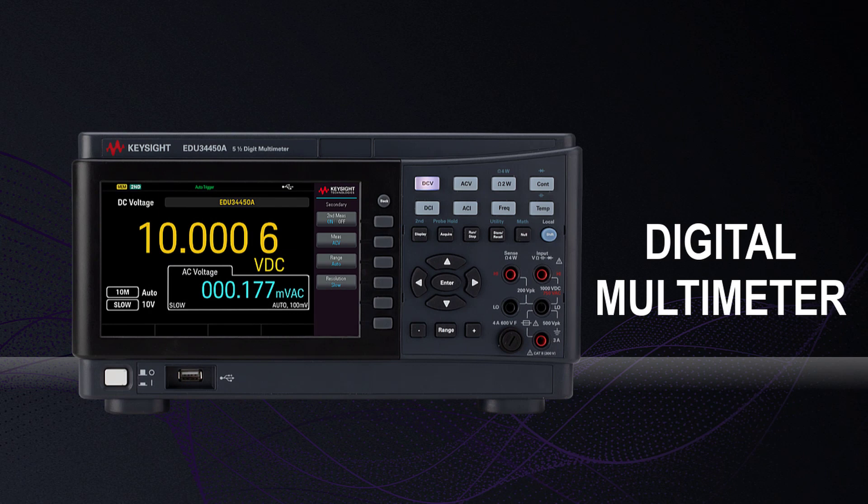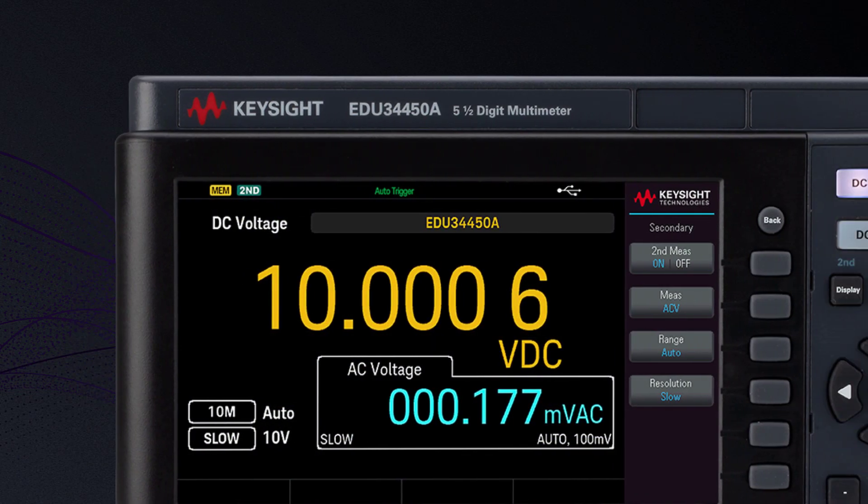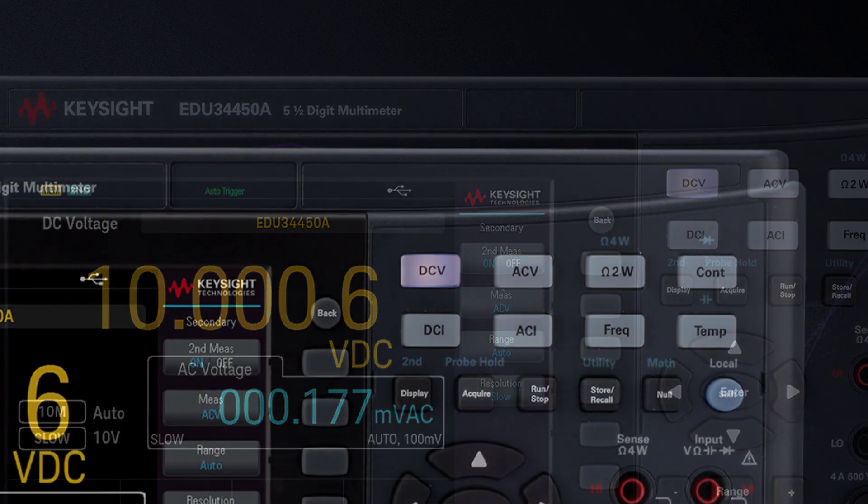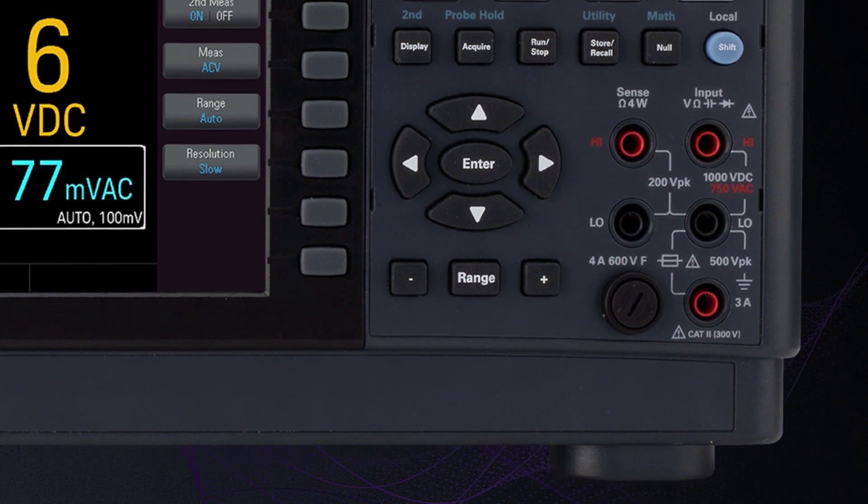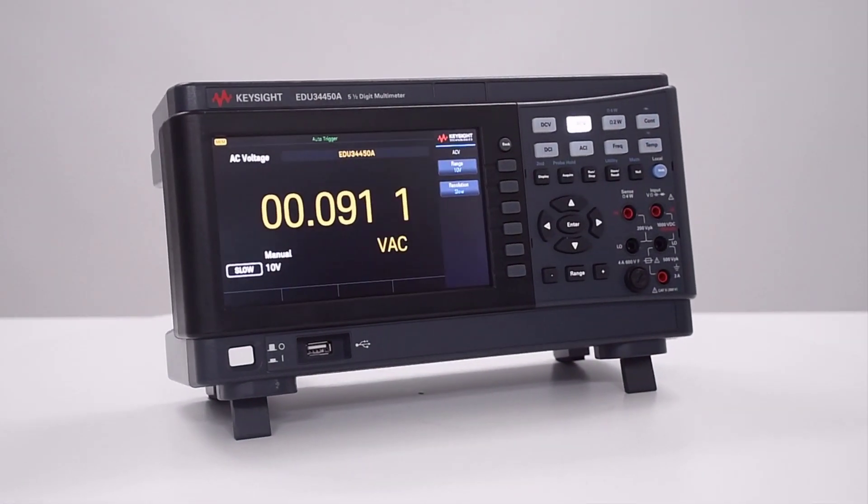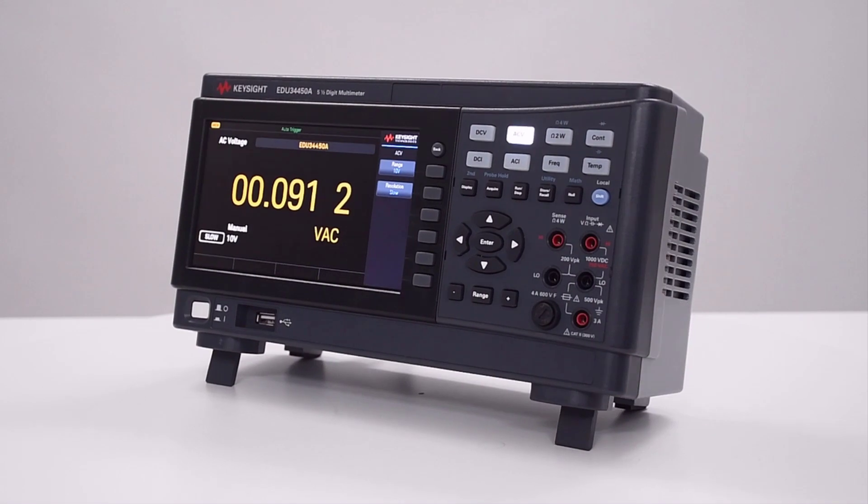The 5.5 digit dual display digital multimeter provides industry-grade measurement capabilities with an intuitive front panel. It measures 11 different input signals featuring 5.5 digits of resolution and a measuring rate up to 110 readings per second for speed critical tests.